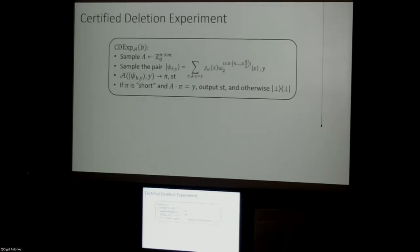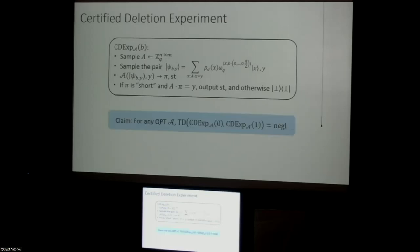Let's formalize what we want to prove. In the certified deletion experiment, we sample a wide matrix A, give the adversary an encryption of B along with Y, and ask the adversary to produce a deletion certificate and a leftover state st. The experiment aborts if the certificate is invalid; otherwise it outputs the adversary's final state. We claim that the trace distance between the adversary's final state — depending on whether they got an encryption of zero or one — is negligibly close. This captures that if they pass deletion, their leftover state has statistically no more information about bit B.